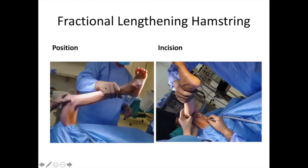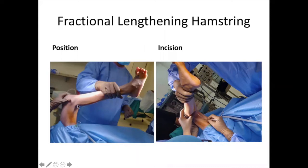We have operated this patient for the hamstring procedure — hamstring fractional lengthening. The key is the semitendinosus transfer to the adductor tubercle. This is very important. If you cut the semitendinosus and release it, the hip will be unstable because there will be no extension at the hip joint. Therefore there should be a transfer. The position is supine, and we do the surgery through incision.